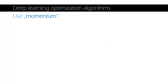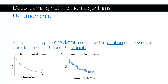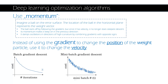So let's begin with momentum. What is momentum? Instead of using the gradient to change the position of the weight, we use it to change the velocity. If you have the cost function, in the mini-batch we have a similar cost function — much more frequent in time. Imagine a ball on the error surface: the location of the ball in the horizontal plane represents the weight vector. The ball starts off by following the gradient, but once it has velocity, it no longer does steepest descent. Its momentum makes it keep going in the previous direction. It damps oscillations in directions of high curvature by combining gradients with opposite signs.